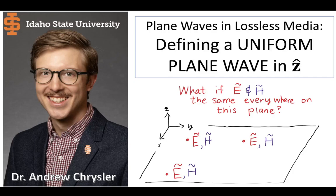In the previous video, we took the wave equation for the electric field and reduced it into three different equations, one for each of the directional components: x, y, and z. That's going to help us a lot in this video, where we define a uniform plane wave which is traveling in the z direction.